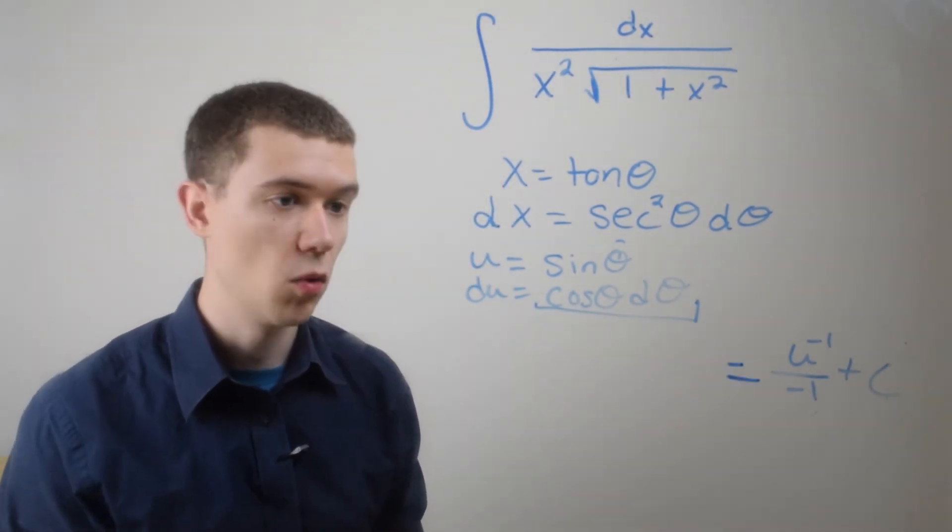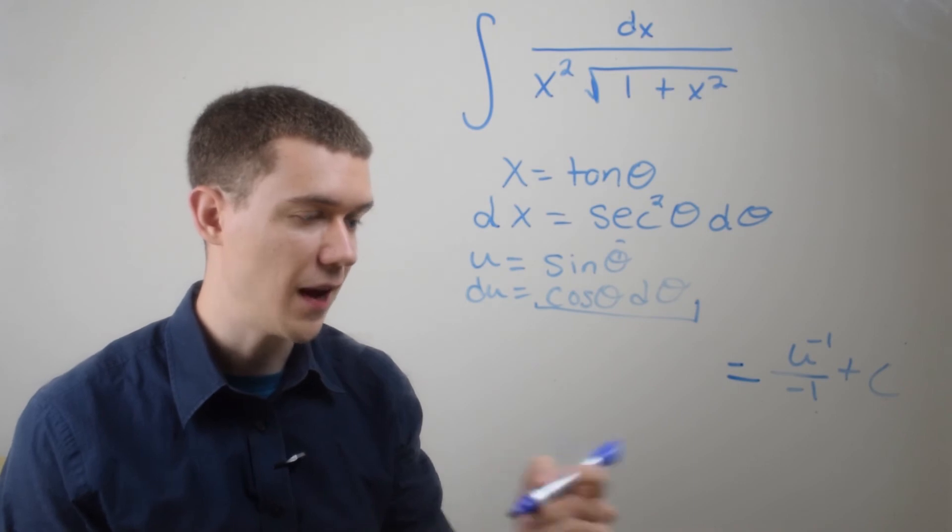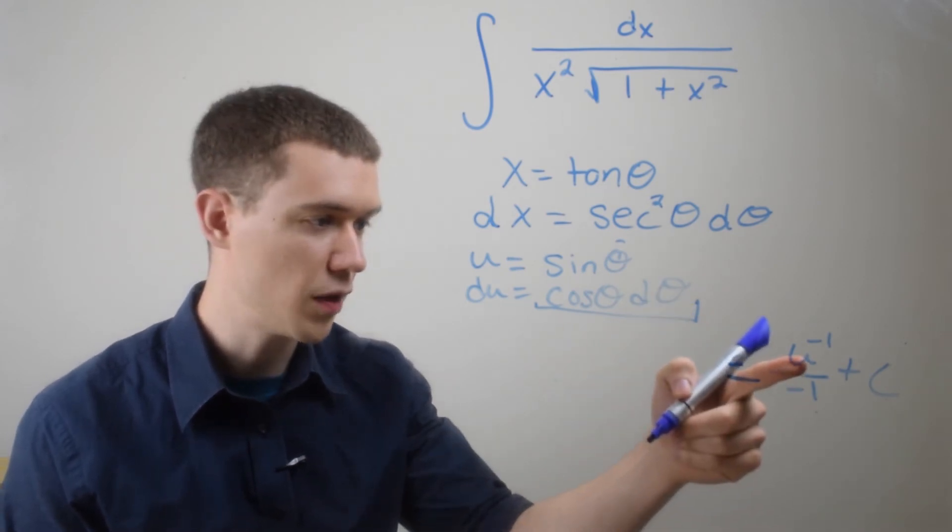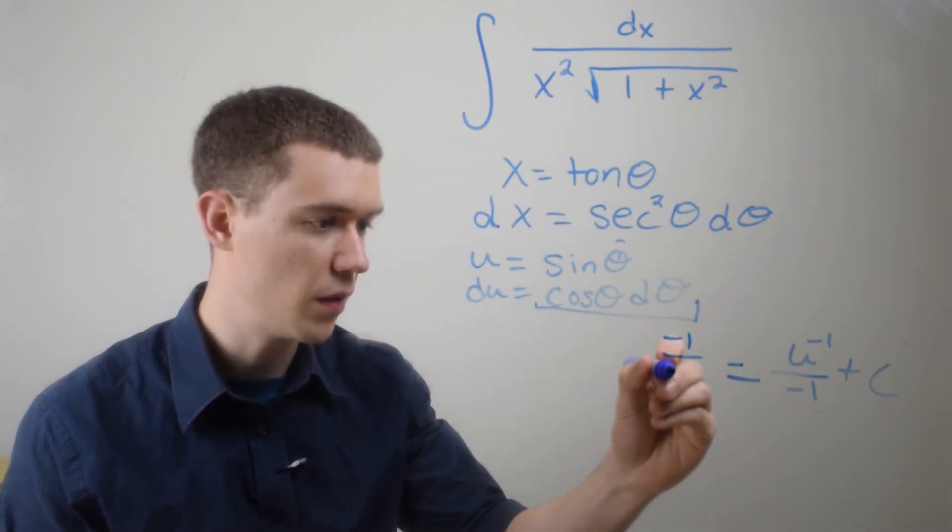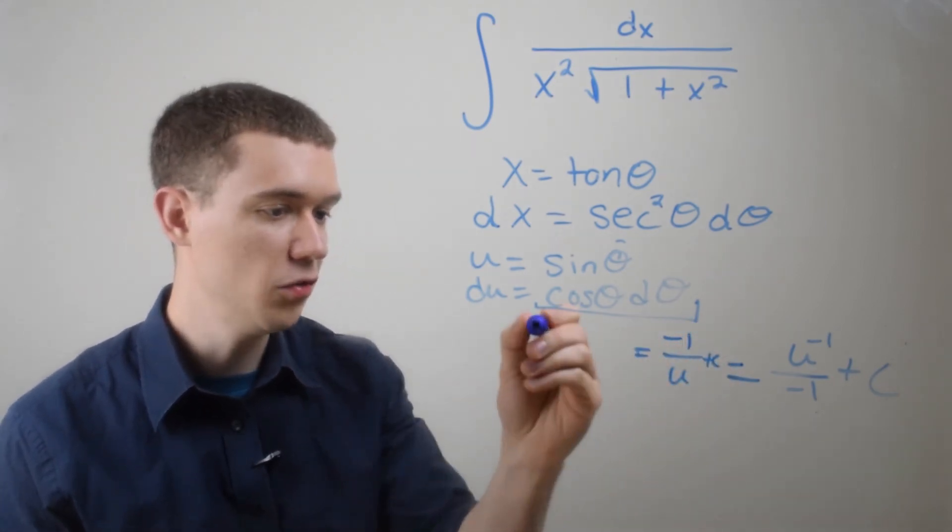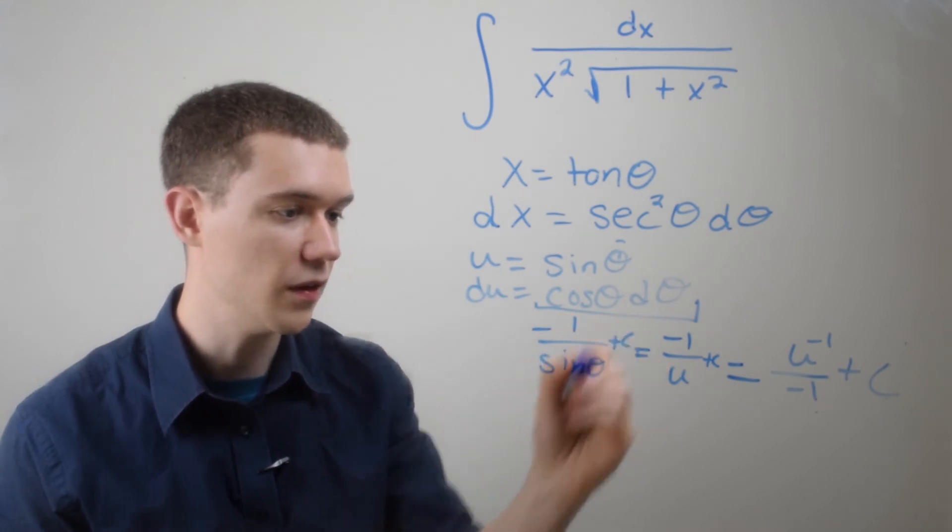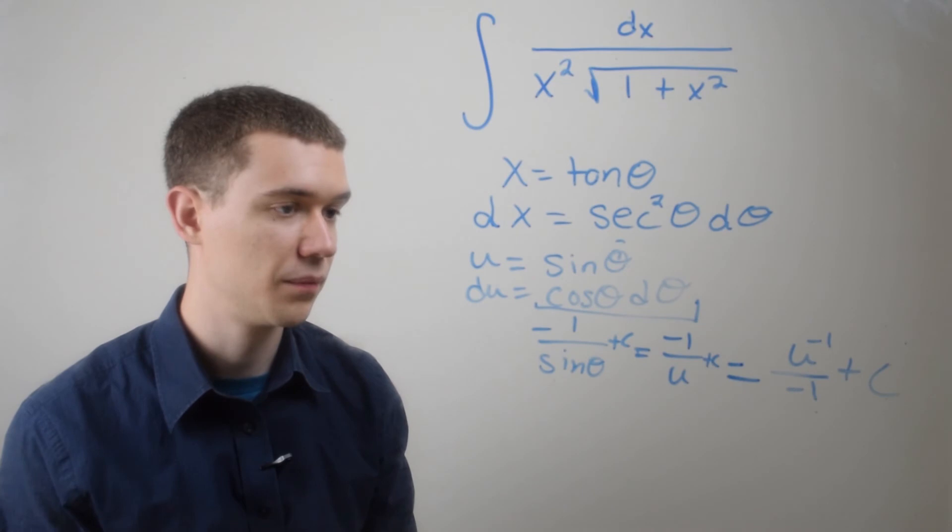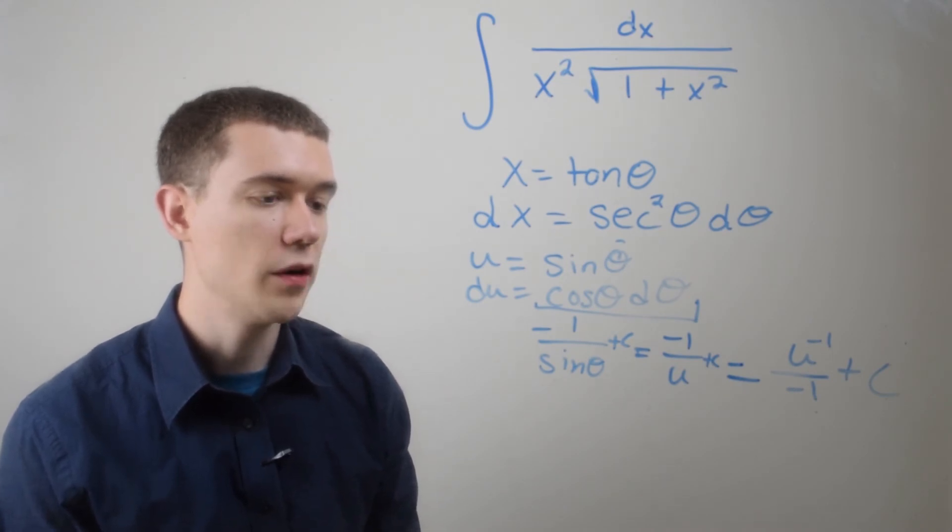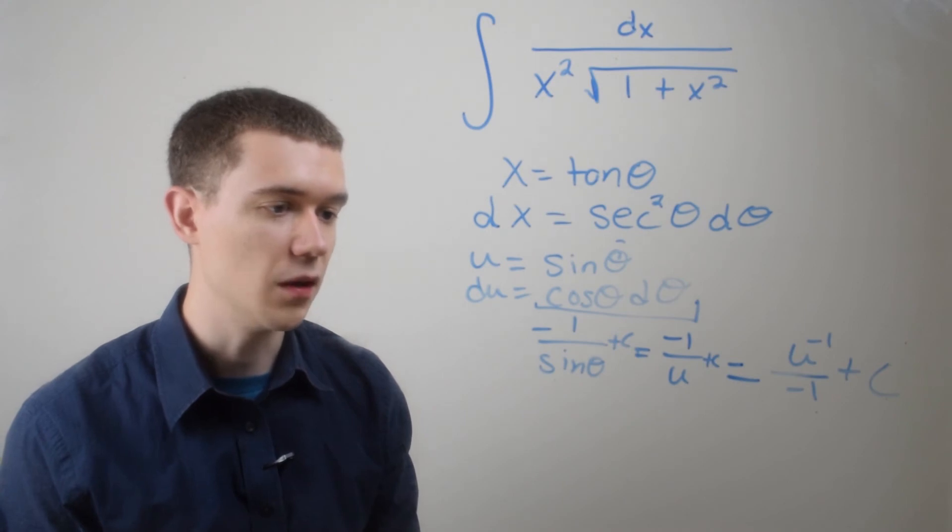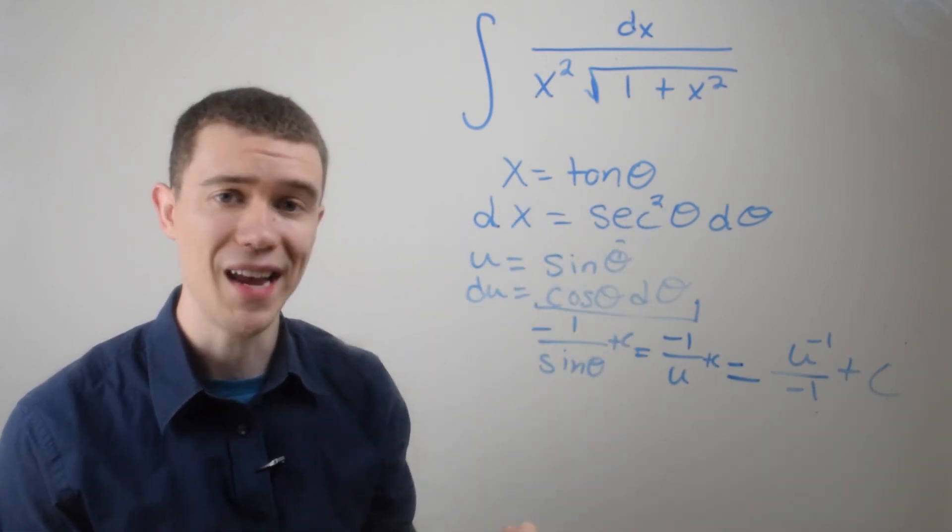So what's u? Well, u is sine theta. And I'll do two things at once. I'm just going to write this like minus one over u plus c. Maybe I won't do it at once. So u is sine theta. So this is minus one over sine theta plus c. But I want to know what is this in terms of x? Well, how can I figure that out? I know what x is. x is supposed to be tan theta.